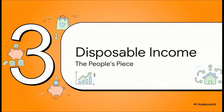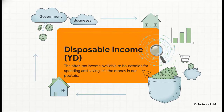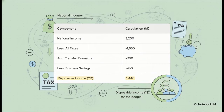So we've sorted out the government's slice of the pie. But what about households? Disposable income is the cash that actually ends up in our pockets after all the taxes are paid and after businesses have kept their share of the profits. To get there, we go back to our national income number of $3,200, subtract all the taxes paid, add back in those transfer payments, and subtract the profits that businesses kept to reinvest — that's called business savings. Do all that, and you're left with $1,440 million: the total disposable income for all households in our economy.